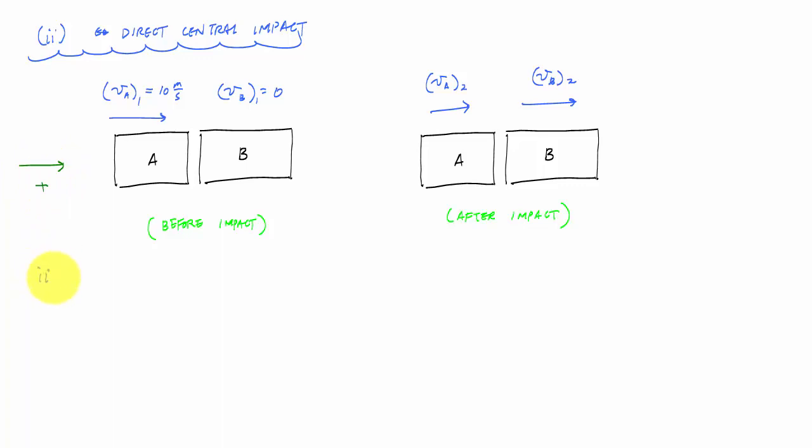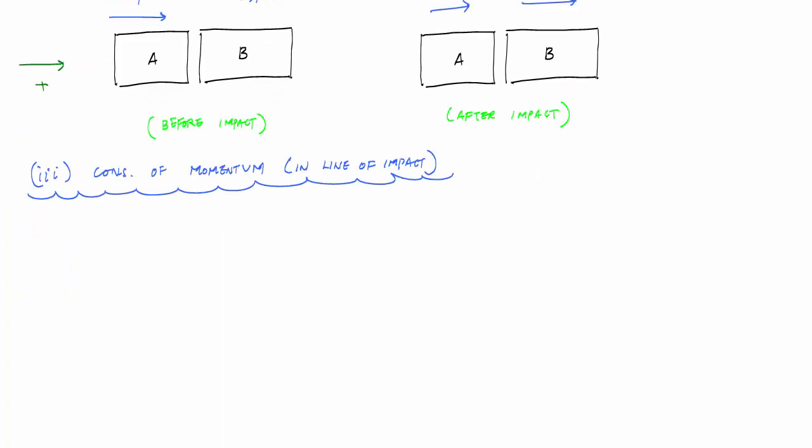The next thing we're going to do is apply the conservation of momentum in the line of impact. So we have two particles: m_A v_A plus m_B v_B is equal to m_A v_A2 plus m_B v_B2. We know the mass of A, we know v_A1, we know the mass of B, we know v_B1 is zero. We don't know v_A2, and we don't know v_B2. So we have one equation, two unknowns, we need another relationship.